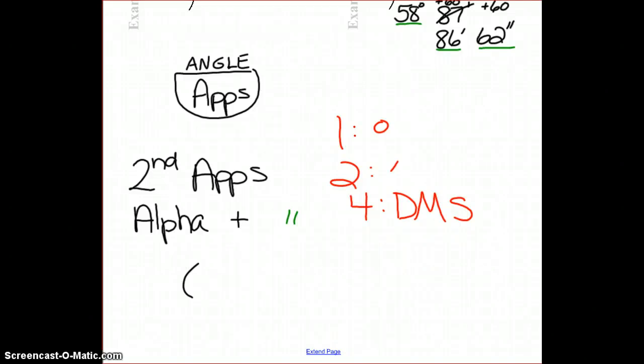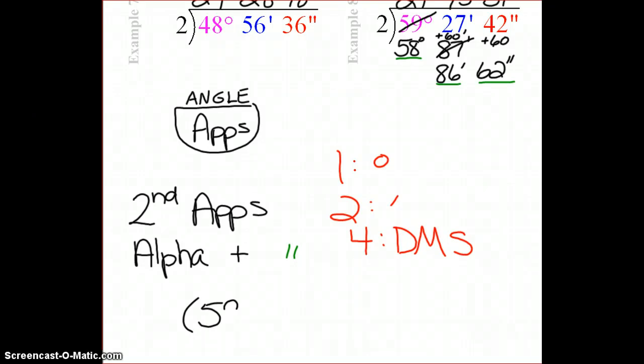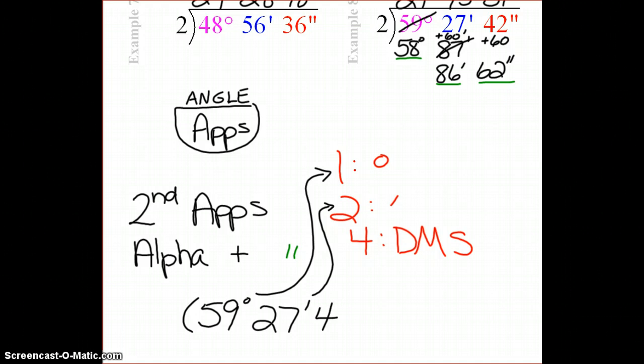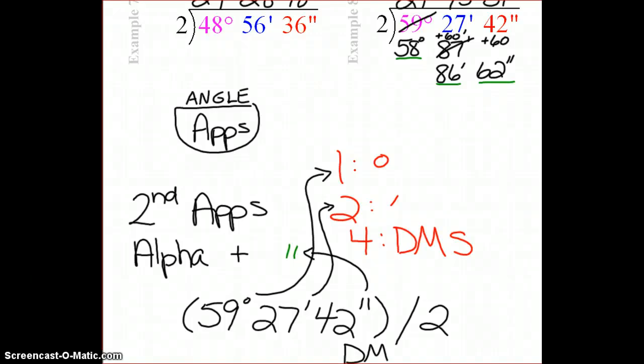and that was 59 and then the degree symbol, again going back into apps. 27 degrees, again going back into apps. And 42 seconds, this time hitting the alpha, which is the green key, and the plus symbol will give you your seconds. Close your parenthesis, hit the division symbol, and the number 2. When you hit enter, you'll get a decimal. So then convert that using your DMS button, which is again found in your 2nd apps.